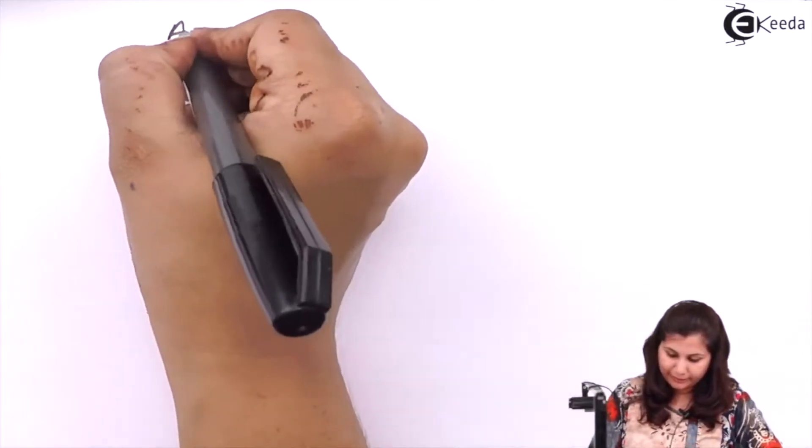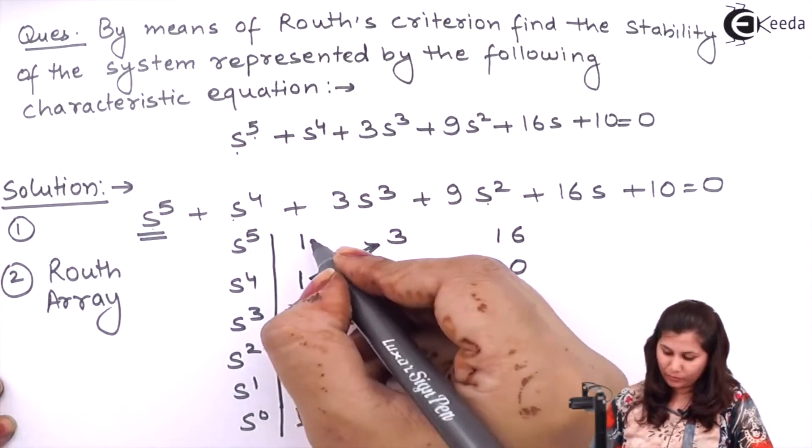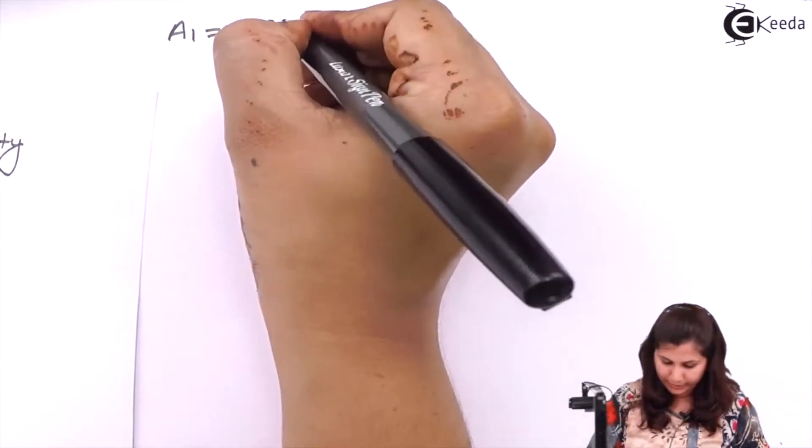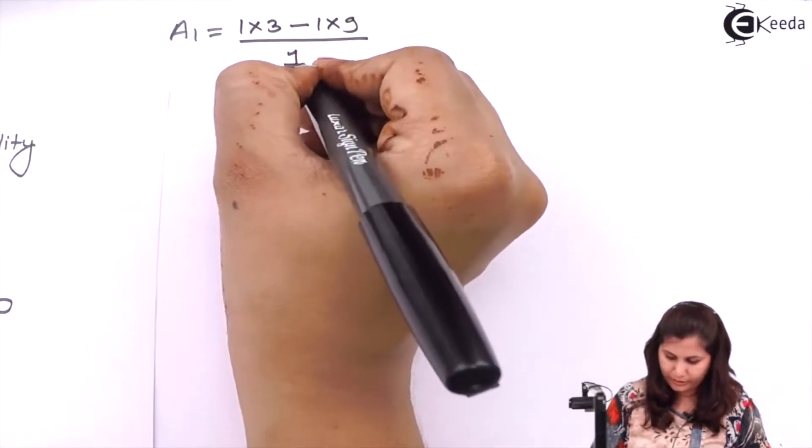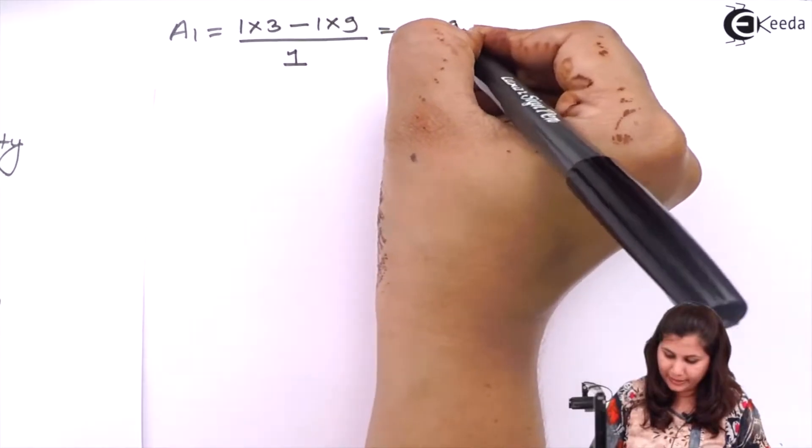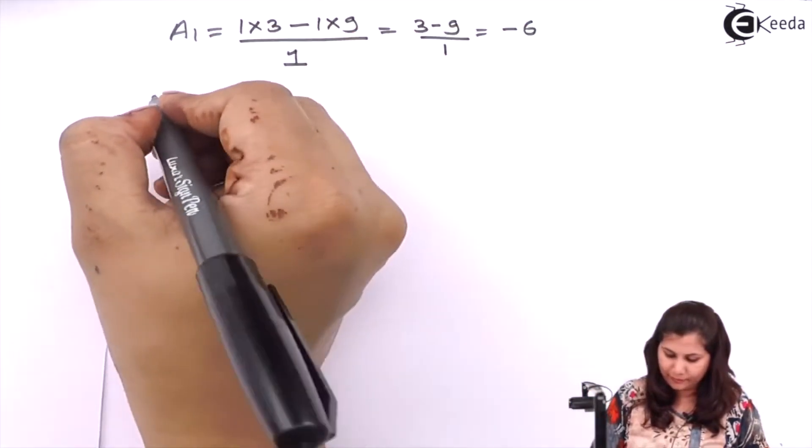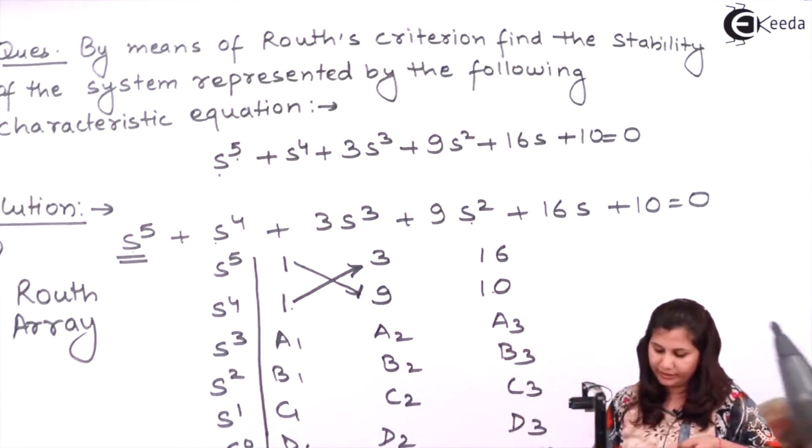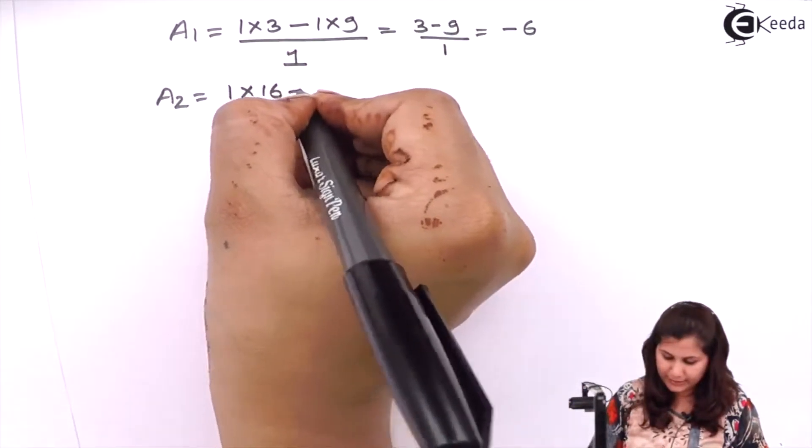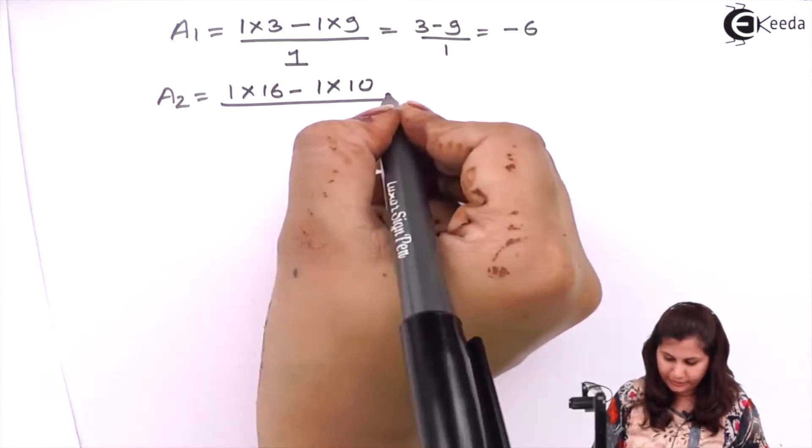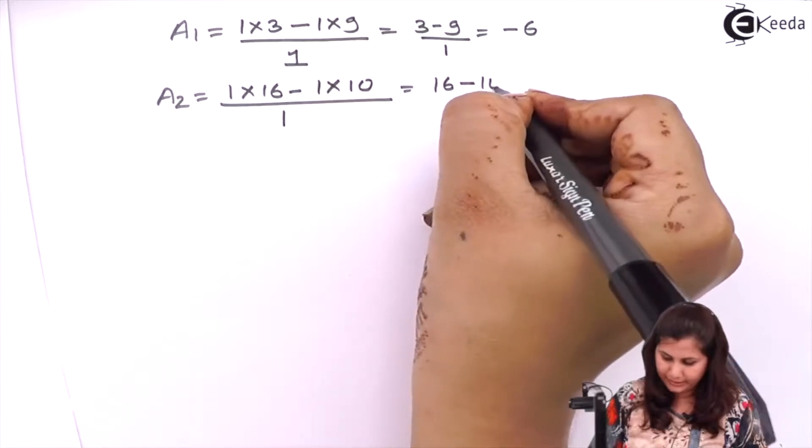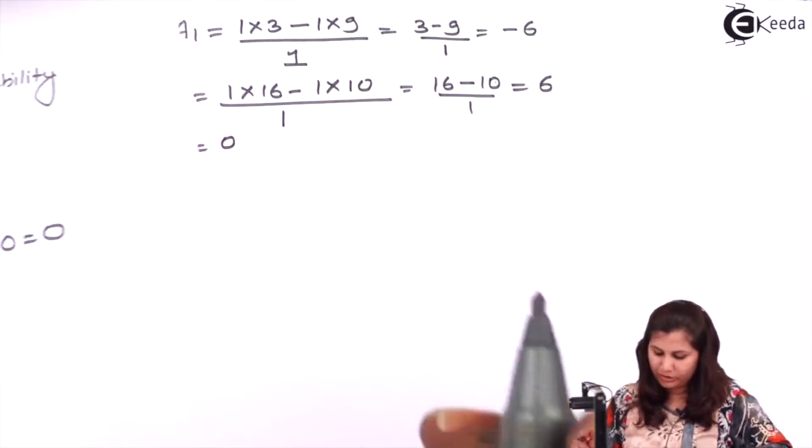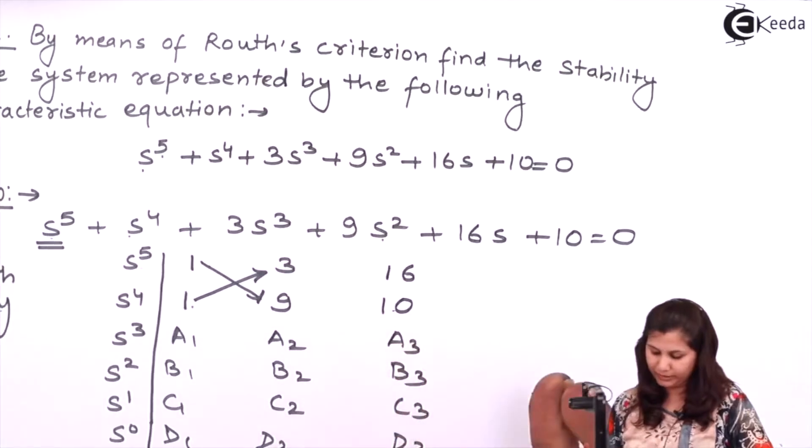a1 will be given by 1 into 3 minus 1 into 9 divided by 1. So 1 into 3 minus 1 into 9 divided by 1, that is 3 minus 9 by 1, that is minus 6. Now a2 will be 1 into 16 minus 1 into 10 divided by 1, so it will be 16 minus 10 by 1, that is 6. a3 will be 0 because we are not having further any terms.